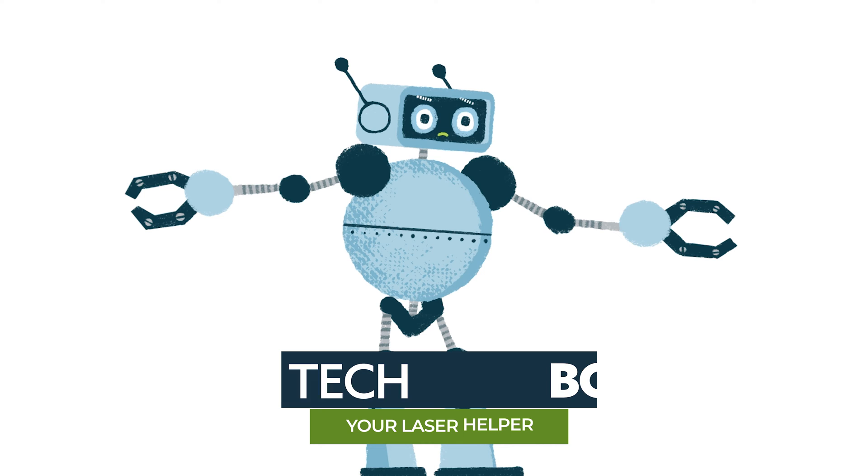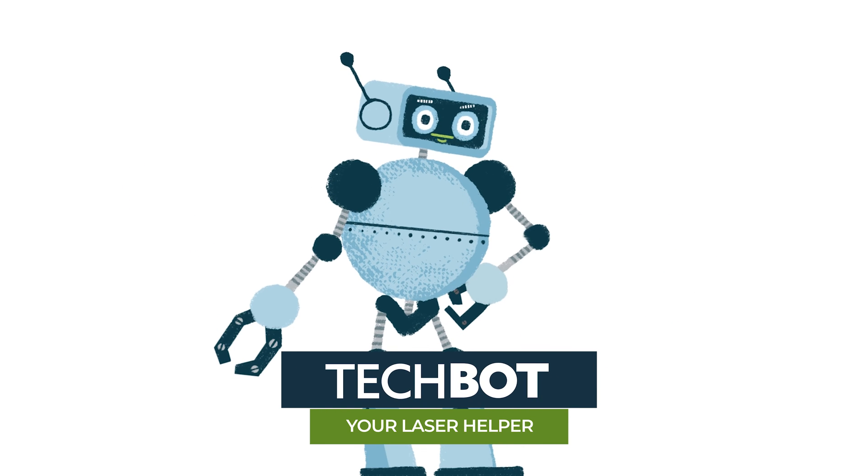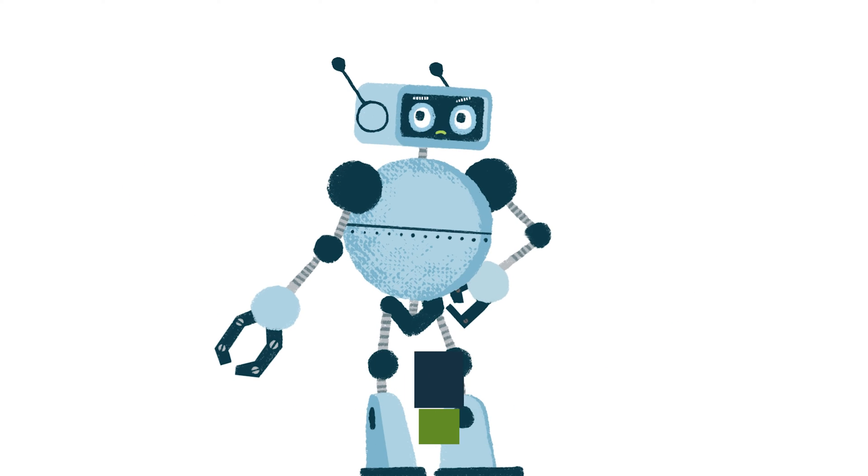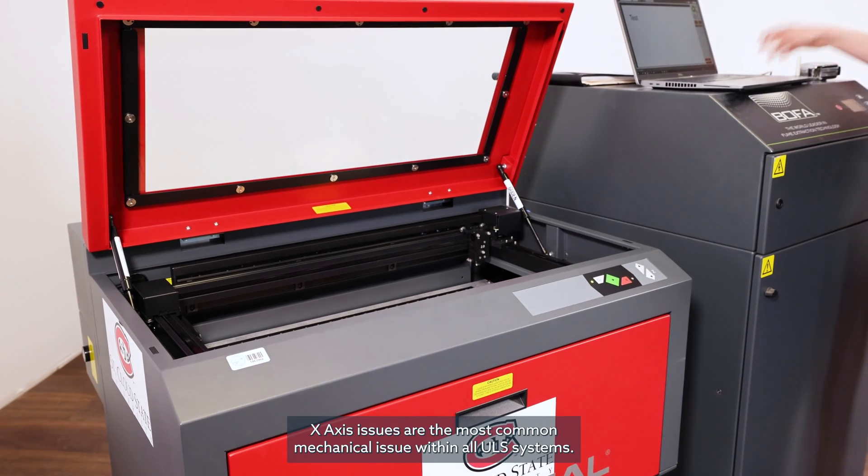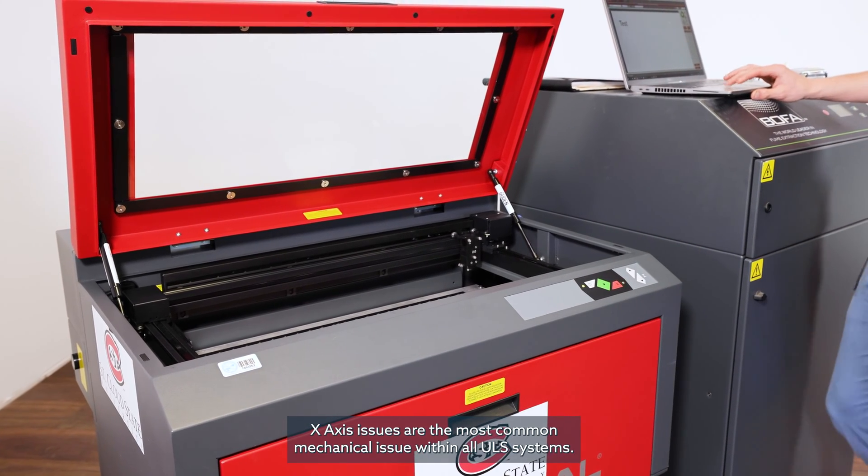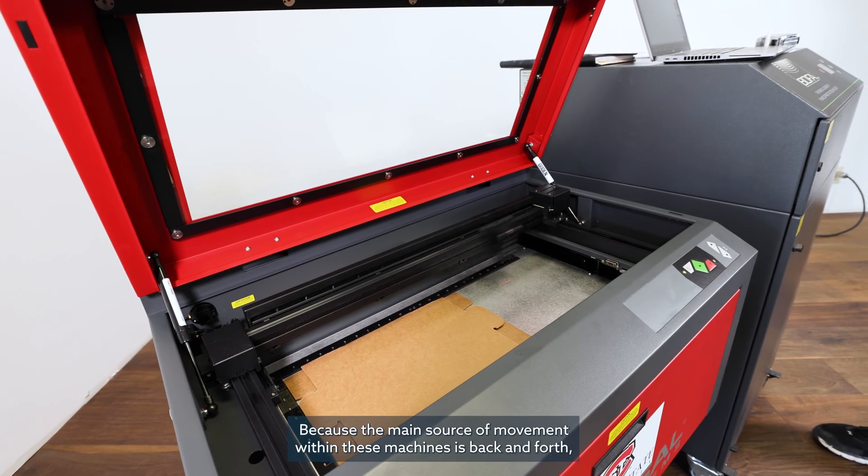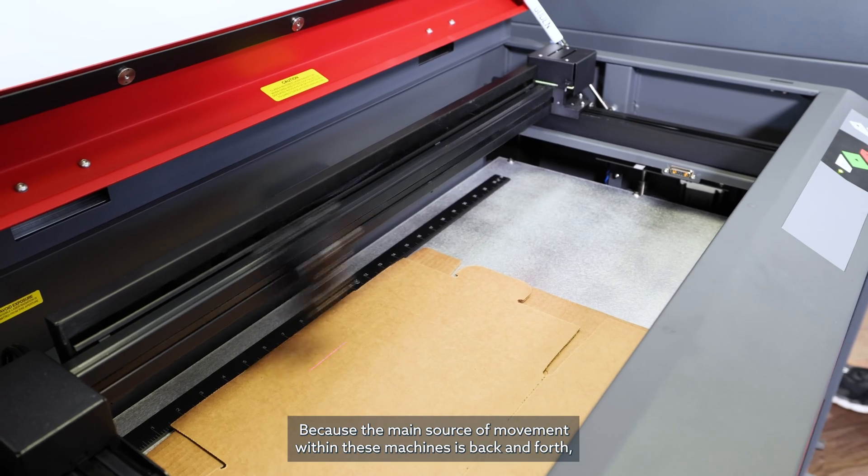Welcome to H2I Group series detailing common issues with your Universal Laser System. Let's get started. X-axis issues are the most common mechanical issue within all ULS systems because the main source of movement within these machines is back and forth.